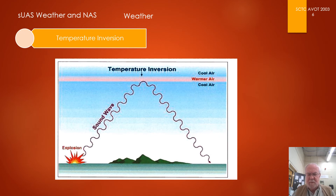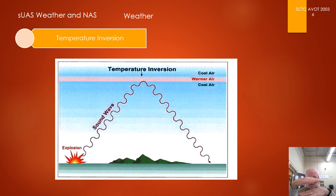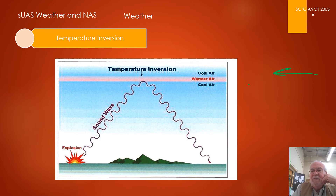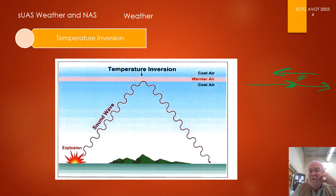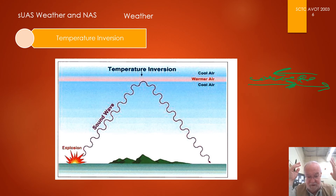Wind shear occurs in temperature inversions as well. Wind shear simply means there are two different wind currents blowing in different directions, and the section between the two directional wind currents becomes turbulent. Imagine wind going one way and then wind going another way — like water, there'll be a lot of turbulence between the two currents as the wind whirls around. That's basically wind shear, and it's obviously turbulent, usually in a fairly thin layer.